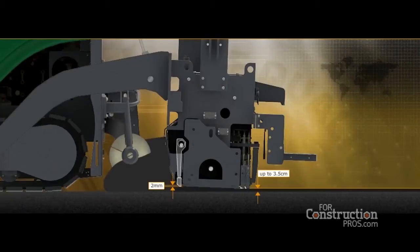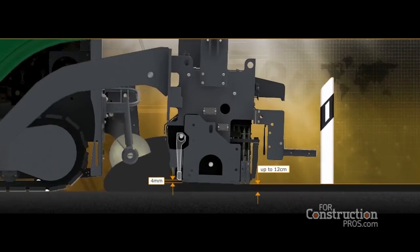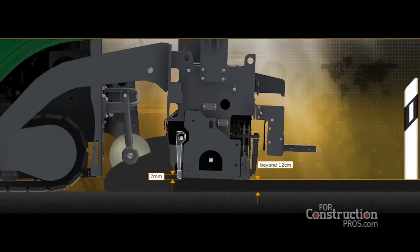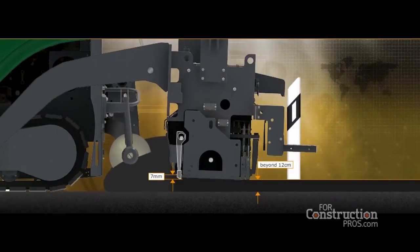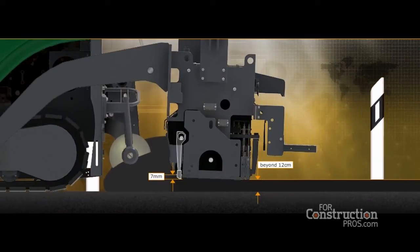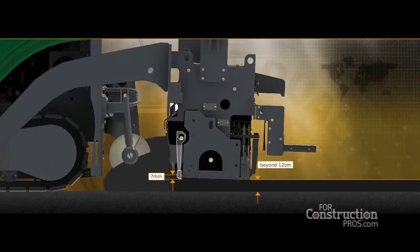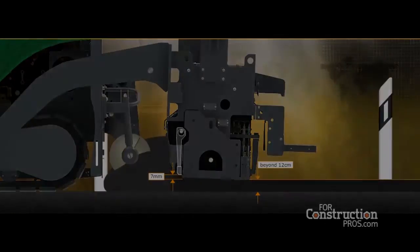The tamper stroke can be set to 2, 4, or 7 millimeters as a function of the quantity of mix, the layer thickness, and the screed type. The following rule applies: the longer the tamper stroke, the higher the degree of pre-compaction and the depth of compaction.